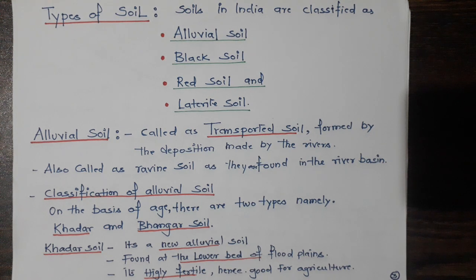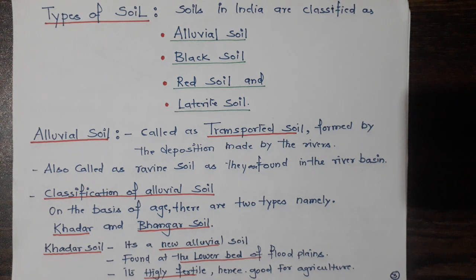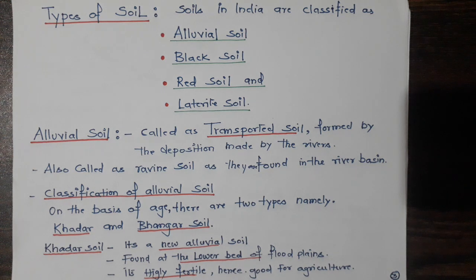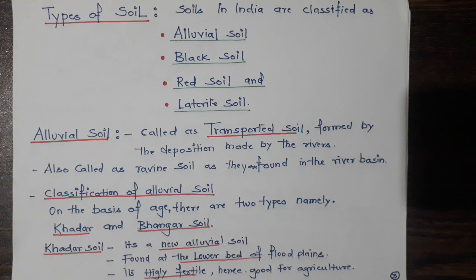Alluvial soil is an example of transported soil because it is formed as a result of deposition made by running water. In India, alluvial soil is found along the foothills of the Himalayas and all along the coastal strips of peninsular India. Hence alluvial soil is known as the transported soil.